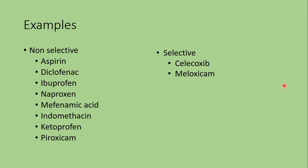Some examples of NSAIDs: the non-selective ones include aspirin, diclofenac, ibuprofen, naproxen, mefenamic acid, indomethacin, ketoprofen, and piroxicam. The selective ones include celecoxib and meloxicam. One important note is that aspirin irreversibly inhibits COX-1 and COX-2, while all other NSAIDs have a reversible inhibition mechanism.